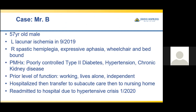Mr. B also has poorly controlled type 2 diabetes and hypertension, as well as chronic kidney disease. Prior to his stroke, he was working, living alone, and was independent. For the course of his stroke, he was initially hospitalized and then transferred to a subacute facility and then to a long-term nursing home. Sadly, he was readmitted back to the hospital due to a hypertensive crisis in January of 2020, just three months after his stroke. So it is cases like Mr. B that made us ask, could we have done better?